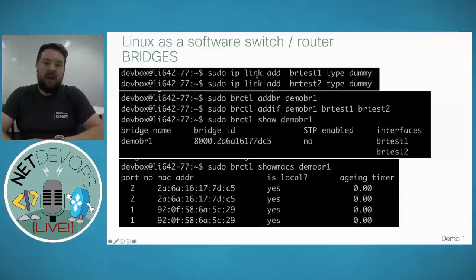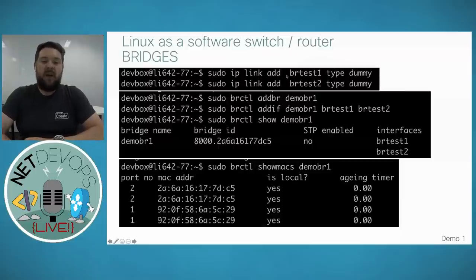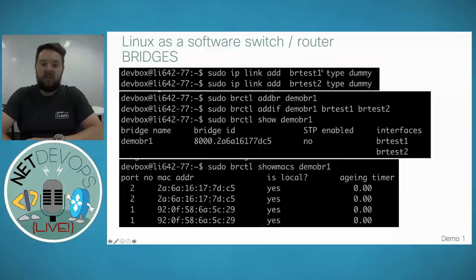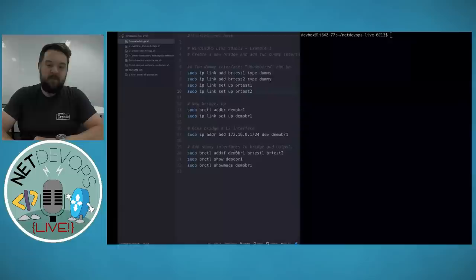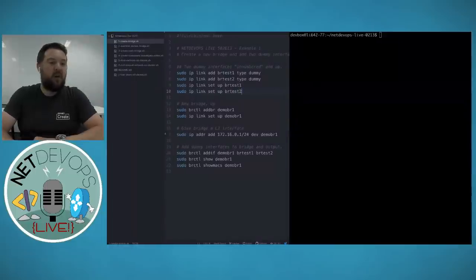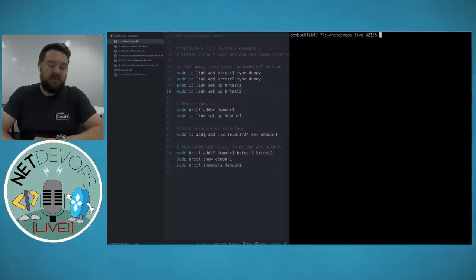The basic layer 2 thing we can do with a Linux box: we could create two dummy loopback-style virtual interfaces and then create a new layer 2 software switch — a bridge — add those two interfaces to it, and we've basically created a software switch with two interfaces. We'll see this quite often as I switch over to my terminal and step through some scripts.